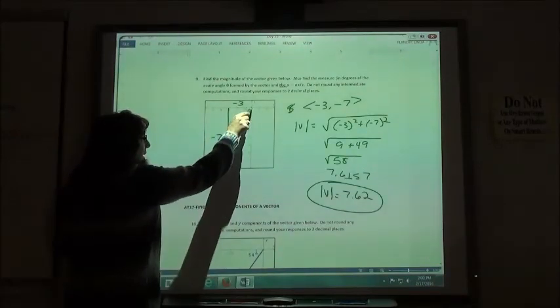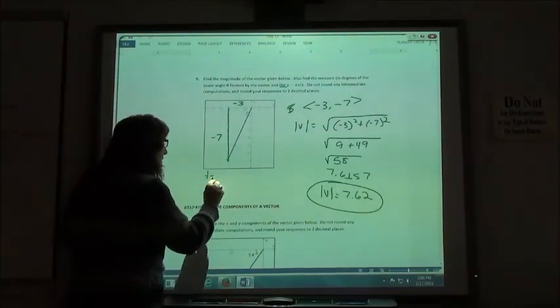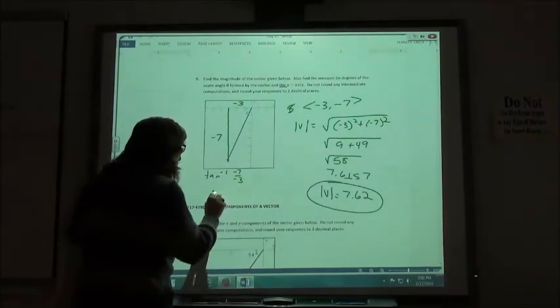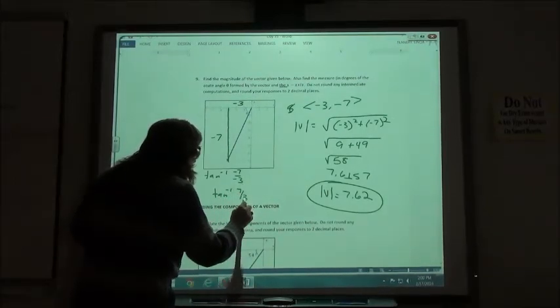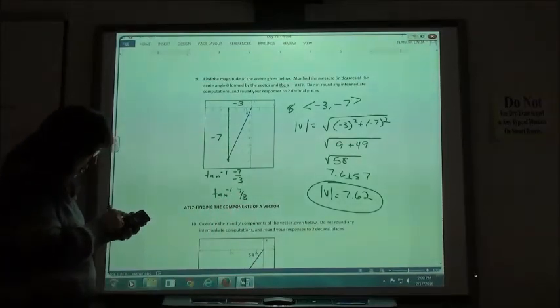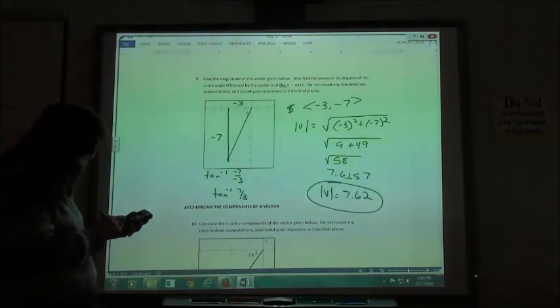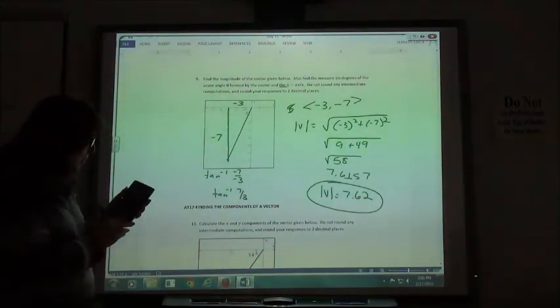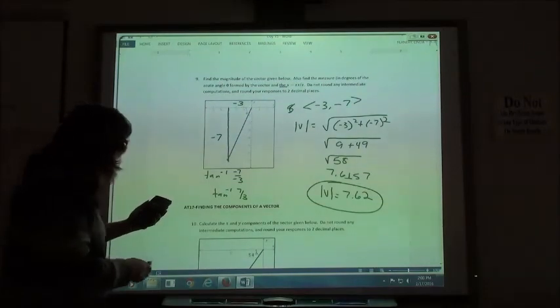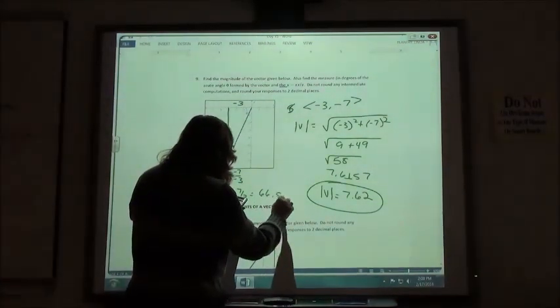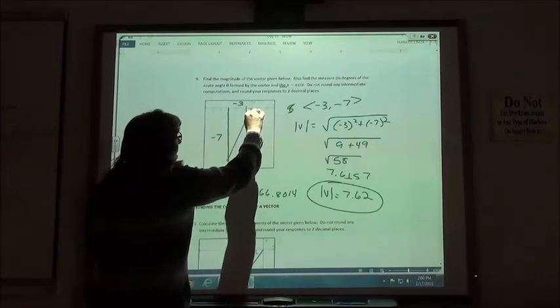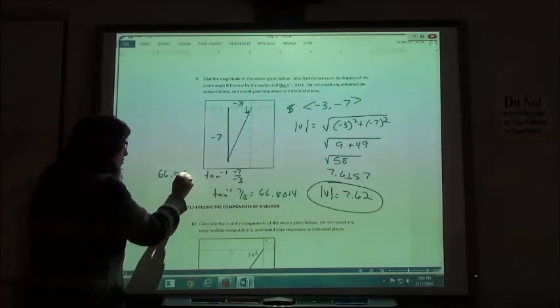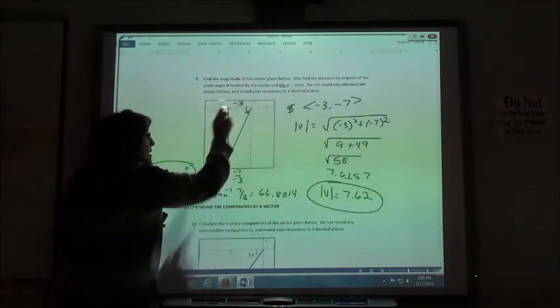For my angle here, again, I have the opposite and the adjacent, so the inverse tangent would be negative 7 over negative 3. So, I'm going to do the inverse tangent of positive 7 thirds. So, inverse tangent of, and I'm going to use parentheses, because I'm not real sure on this calculator if I need them or not. So, to be sure, I put parentheses around my fraction, and I get 66.8014. Again, that is a positive angle, so I'm okay there. So, my answer is going to be 66.80 degrees for what the measure of that angle is.